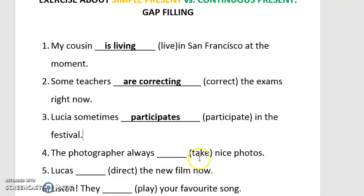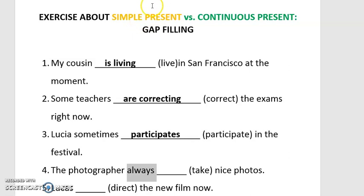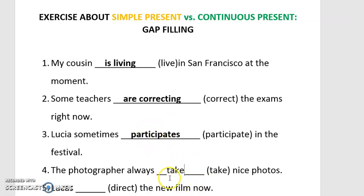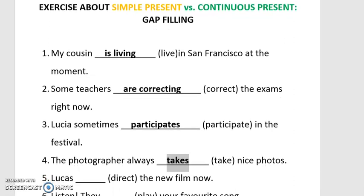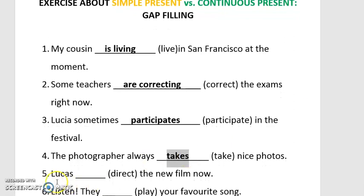Number four: 'The photographer __ always __ nice photos.' The expression 'always' is an adverb of frequency, which is used in simple present. Analyzing the verb 'take,' as in the previous exercise, we need to conjugate it for third person singular: 'takes.' So the answer is 'The photographer always takes nice photos.'